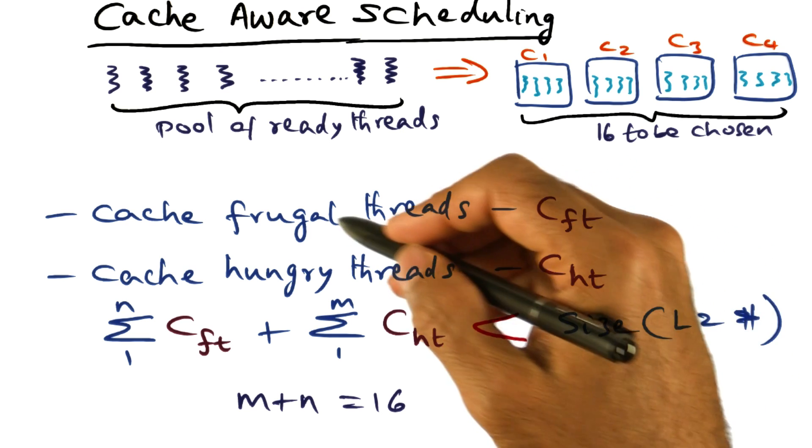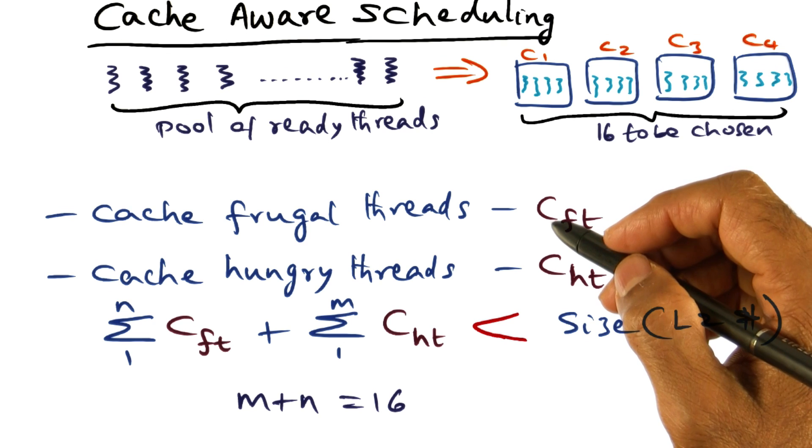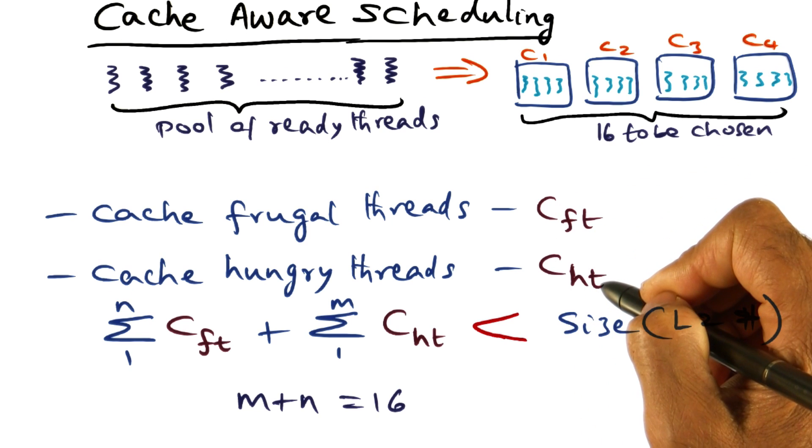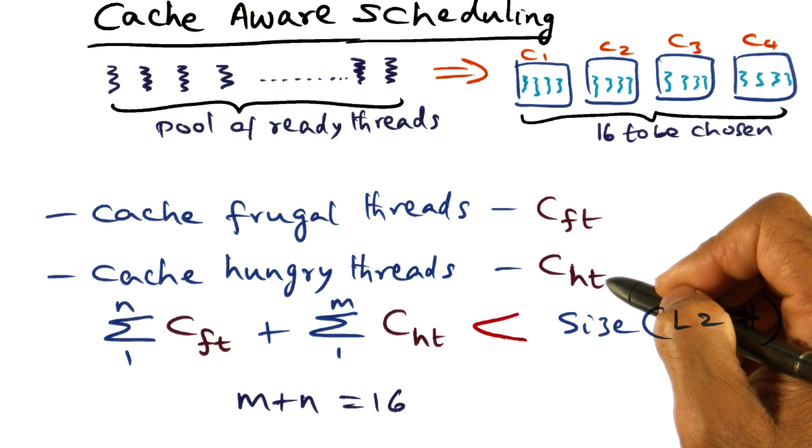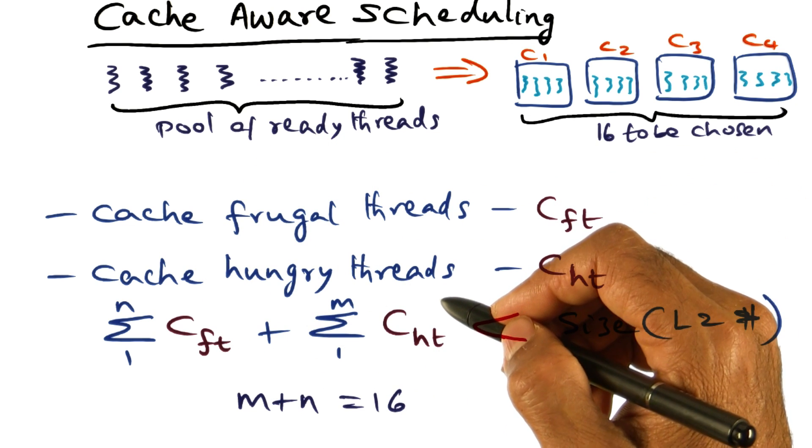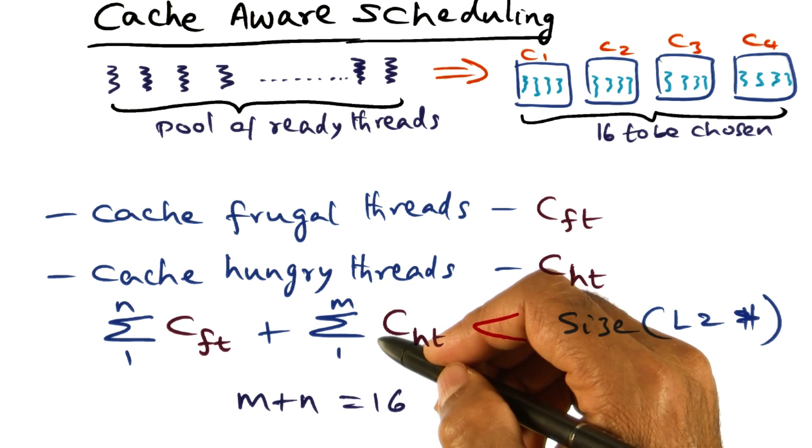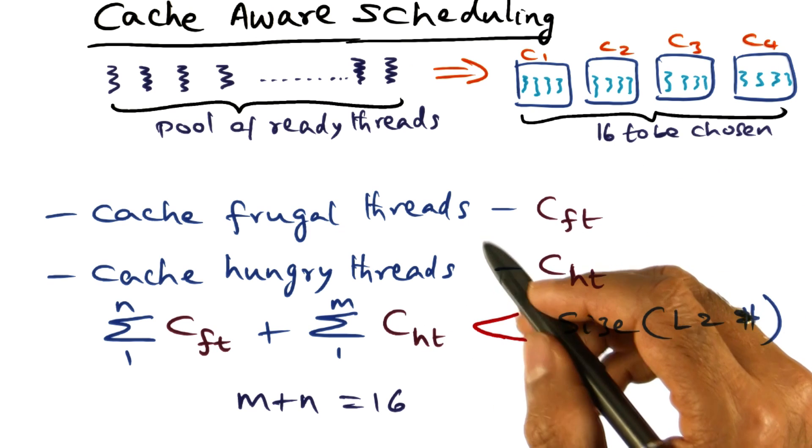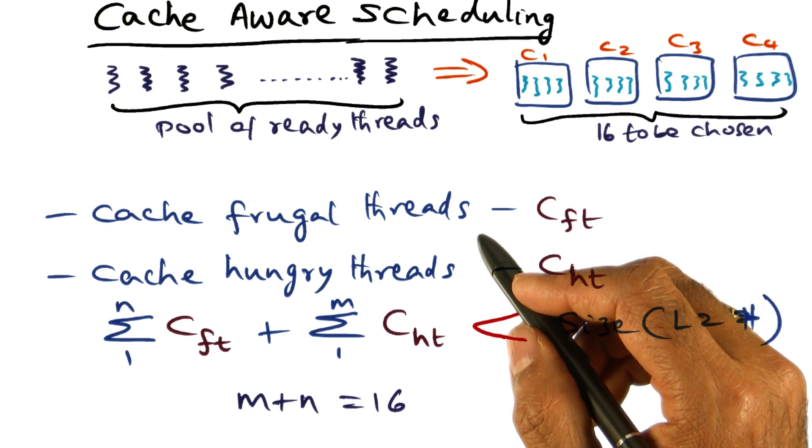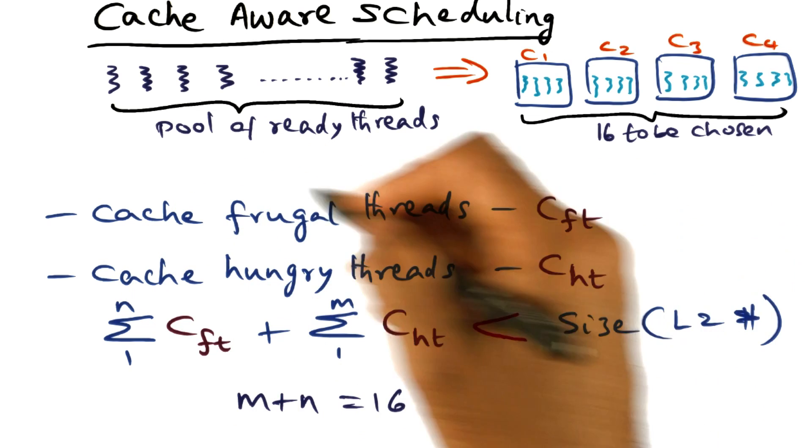I mentioned that we have to profile these threads or monitor these threads as they're executing in order to figure out their cache occupancy over time so that we can categorize these threads as cache-frugal or cache-hungry. And the more information the scheduler has, the better decision it can take in terms of scheduling. But you have to be careful about that. In order for the system to do this monitoring and profiling, clearly the operating system has to do some work in the middle of these threads doing useful work.